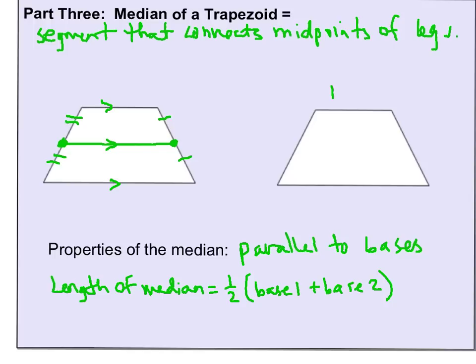If I say that this is base one and this is base two, if I add those two lengths together and divide by two, or multiply by half, which would be the same thing, you will get the length of the median.